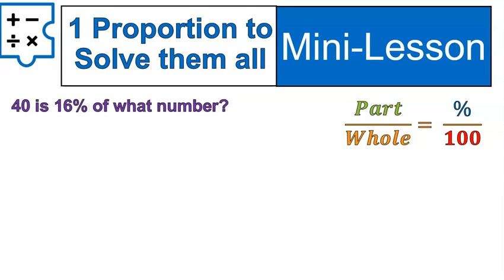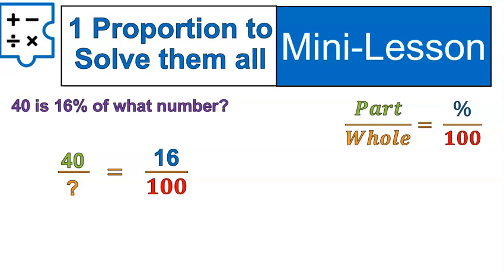Now let's look at this type of question: '40 is 16% of what number?' We'll set up our proportion. We know 16 is the percent — the percent is always the easiest one to pick out. 40 is 16% of some number, so 40 is the part and the whole number is our unknown. In every single case we have one unknown value and we use the same exact proportion. There are many shortcuts for percent problems, but you'd have to use a different one in each case. This way it's one proportion and it solves all percent questions.